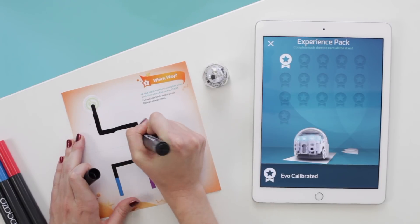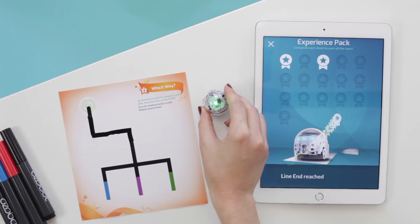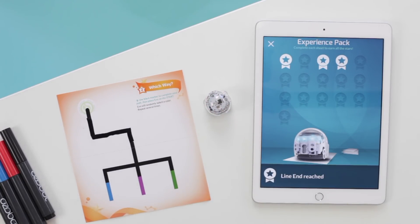Then fill in your first activity and place EVO on the start. You'll get different stars for different activities. Complete all of the sheets to collect all of your stars.